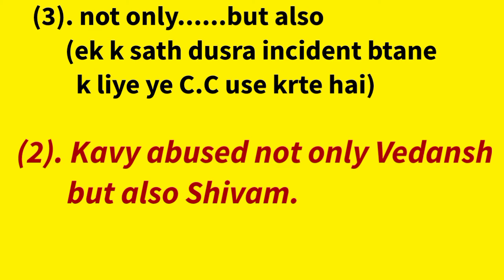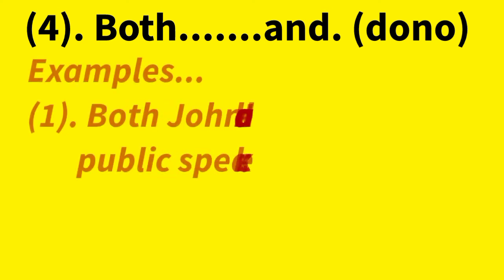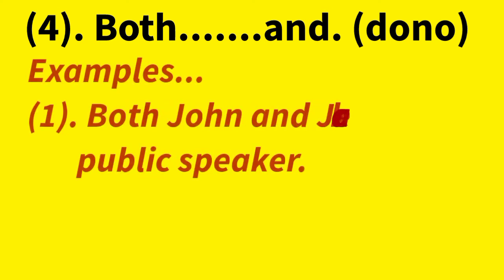The fourth correlative conjunction is both...and, meaning 'dono.' Let's look at examples. First example: Both John and Jack are public speakers — John aur Jack dono public speakers hain. The correlative conjunction both...and indicates both subjects together.